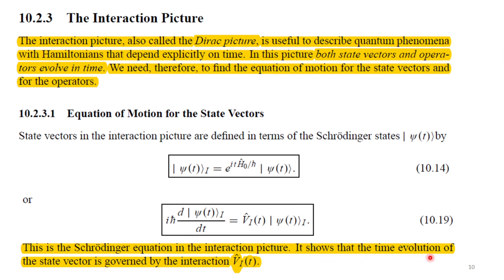The evolved system has a Hamiltonian H which is decomposed into h-naught plus V, where h-naught is the Hamiltonian of the unperturbed system and V is the time-dependent part of the Hamiltonian. Don't be confused — it's not that difficult. I will shortly connect these terms to the perturbation theory and they will become clearer.